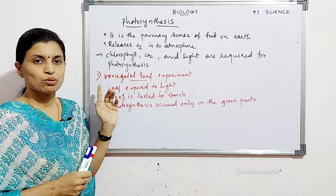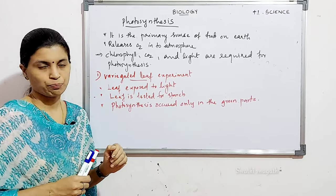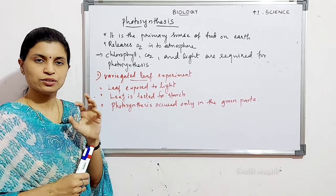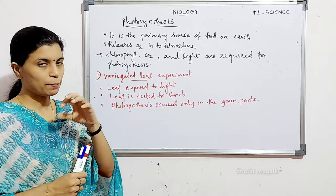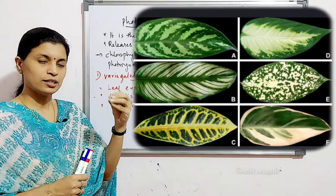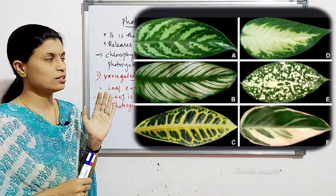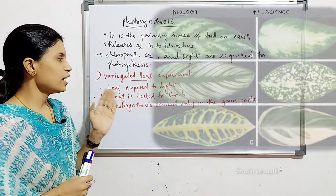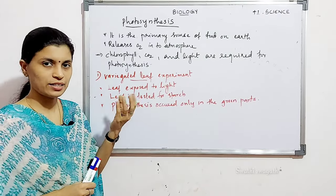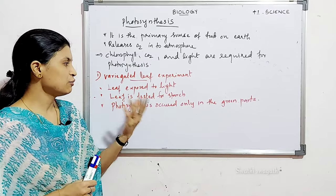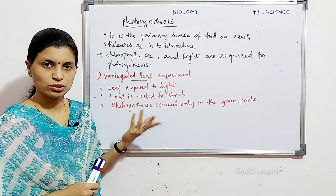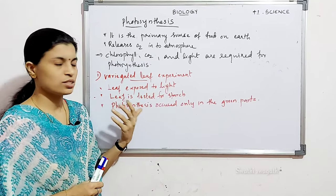Let's see the first experiment, called the variegated leaf experiment. A variegated leaf has parts that are green and parts that are not green. Such a variegated leaf is exposed to light for some time, and then the leaf is tested for starch. Starch formation indicates that photosynthesis has occurred.